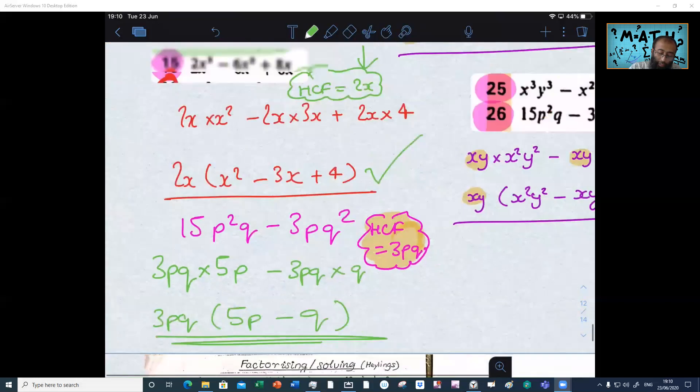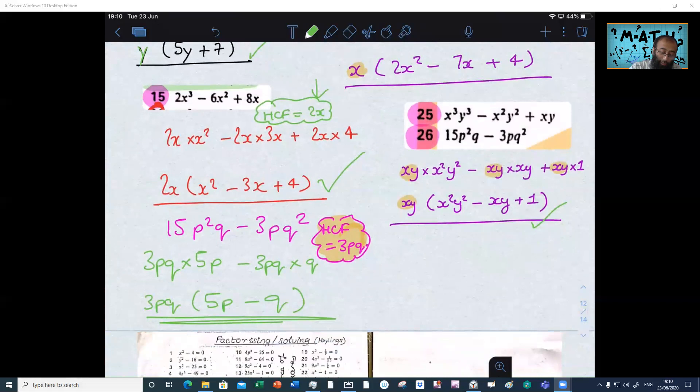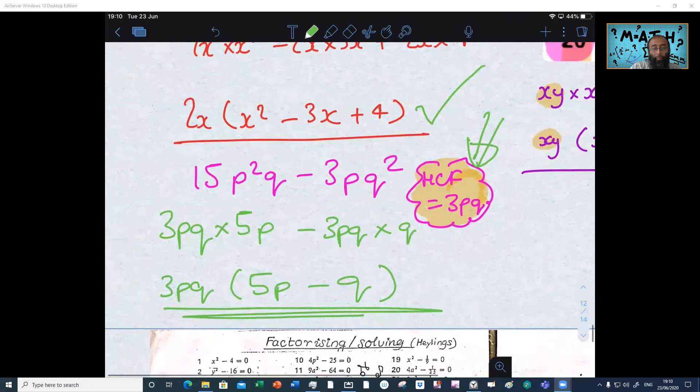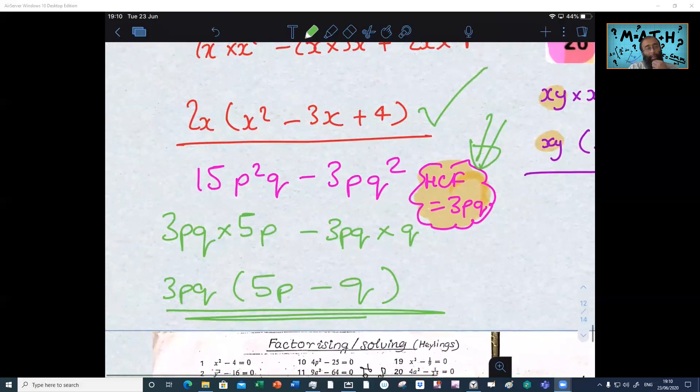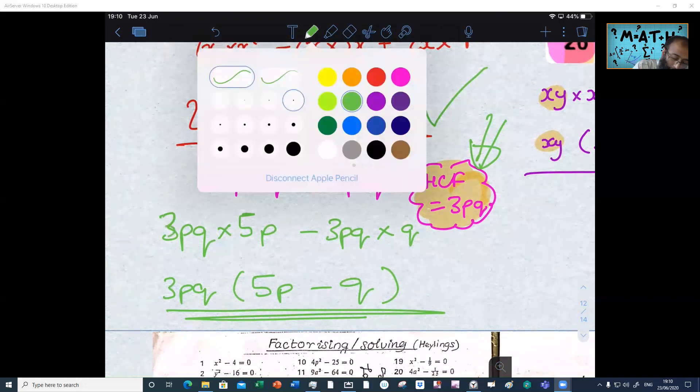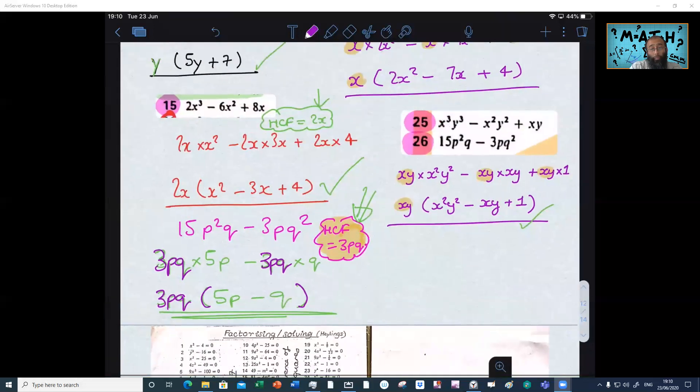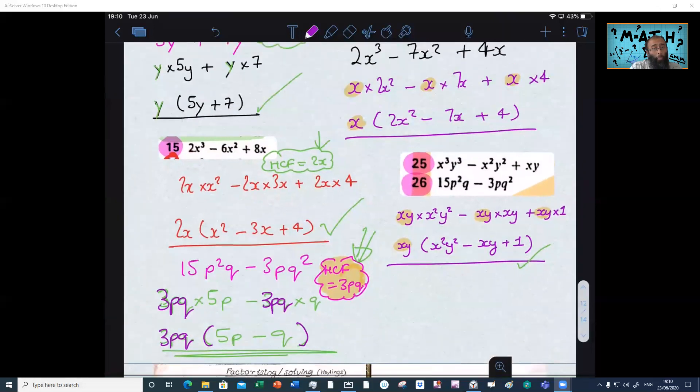The next one. Yeah. 15p squared q minus 3pq squared. Yeah. So the first question I'm going to ask you is this. Oh, I got it right. So what is the highest common factor? 3pq. Yeah. So if we then take 3pq out over here, here's the highest common factor on both sides. And you put 3pq over here. So what are we left for inside the brackets? And then 5p minus 2. Done. Yeah, I got it right. Okay, that's good. I thought I got it wrong.